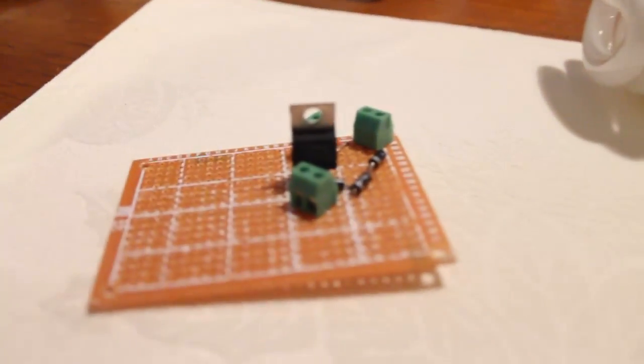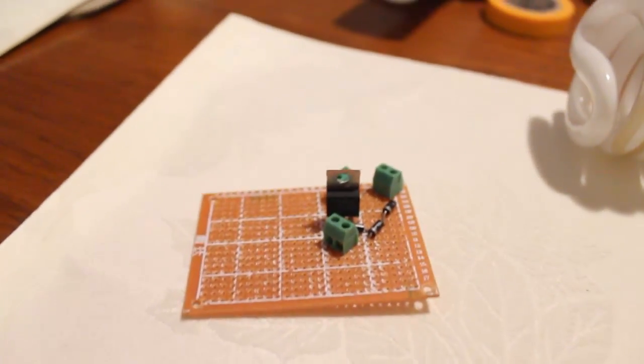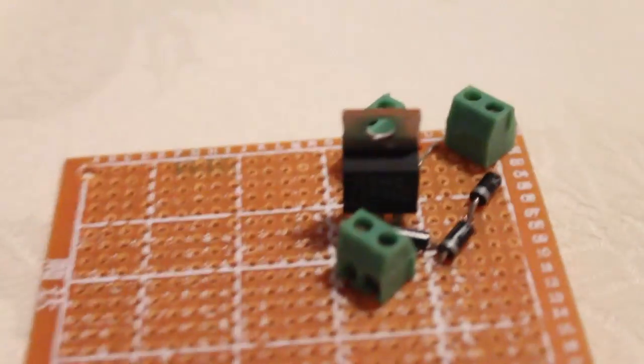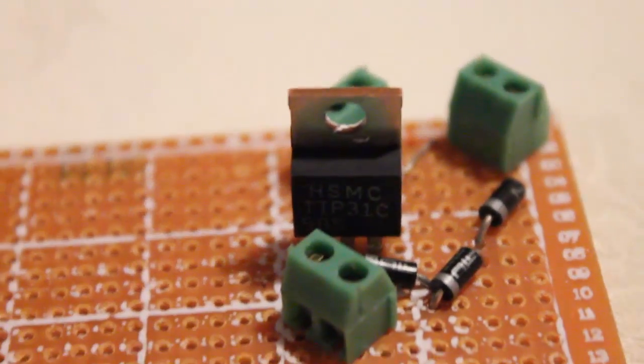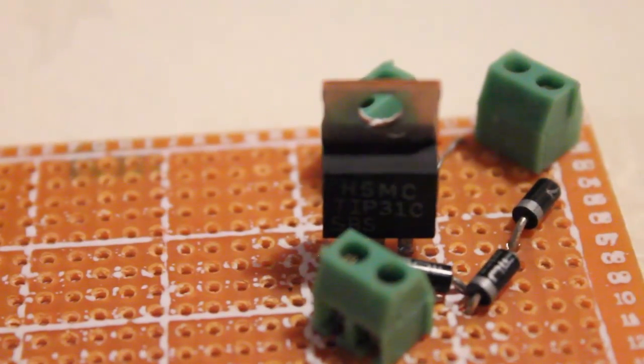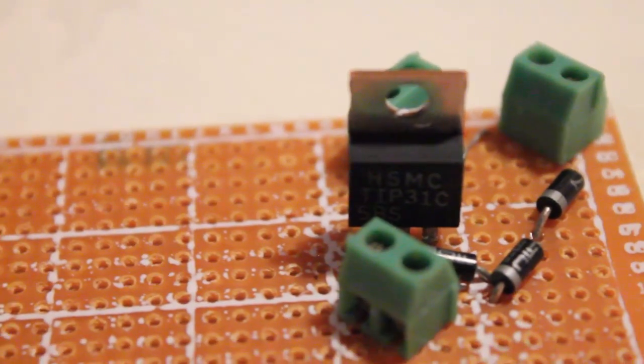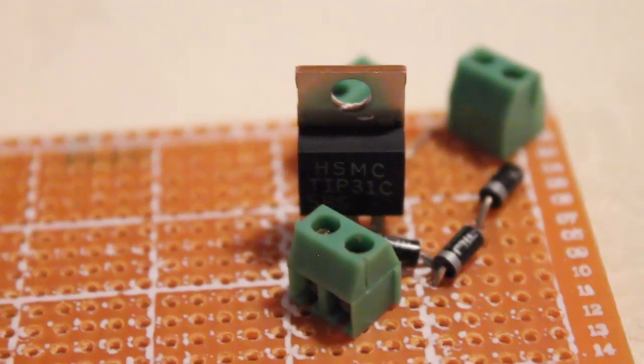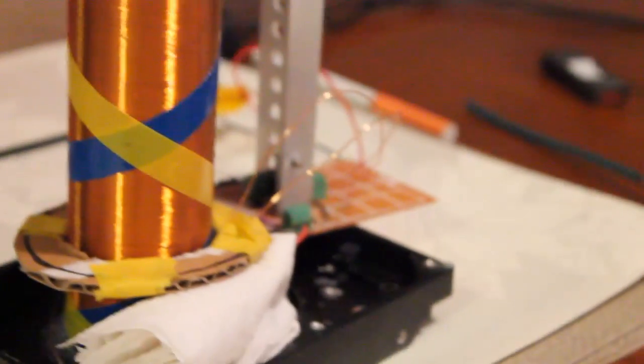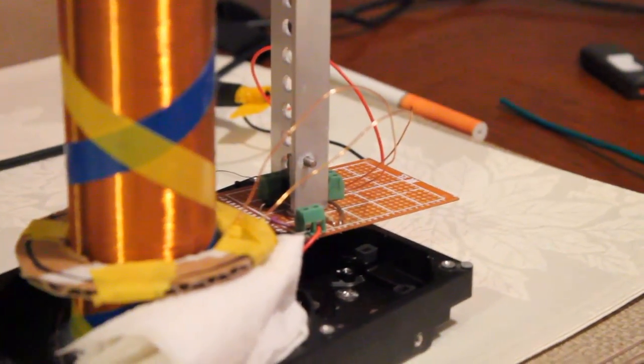For those who haven't seen the other videos or taken the time to look through them, that is a TIP-31C transistor. There you go. I'm pretty sure I got that in good frame. This circuit is identical to all these circuits over here. Same circuit.